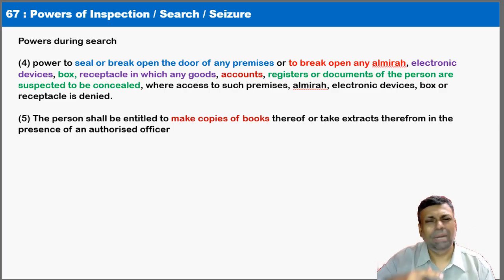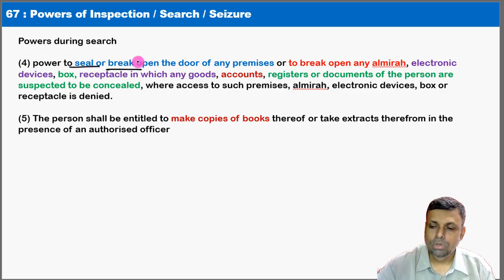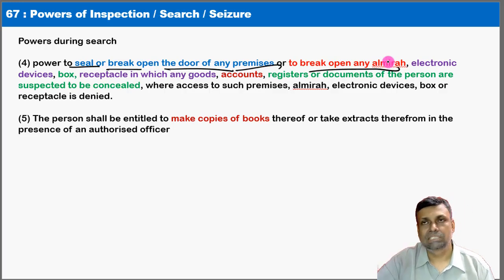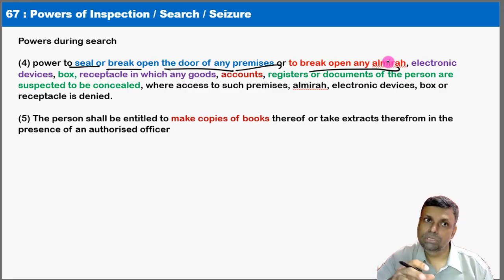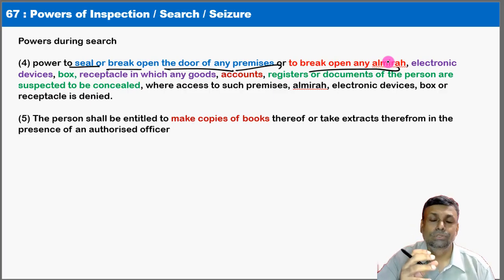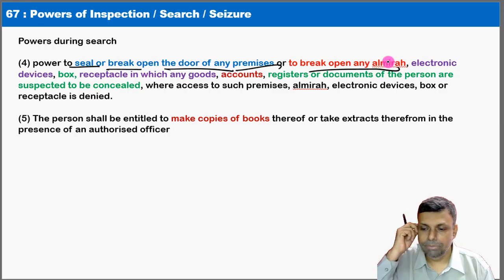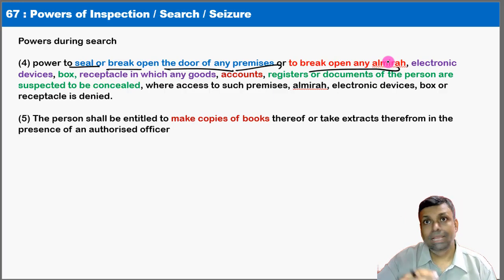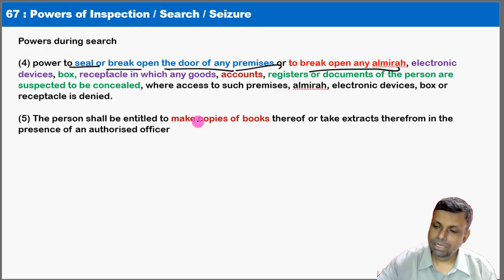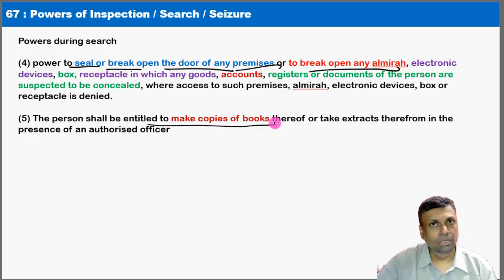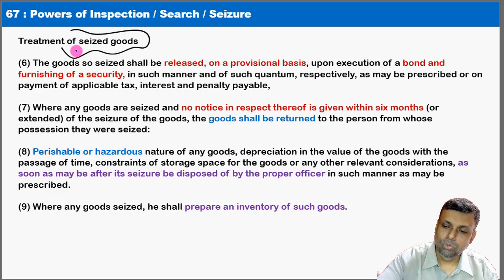During search operations, authorities have broad powers: they can break open sealed doors, premises, almirahs, electronic devices, boxes, and receptacles. This extraordinary power exists because items may be hidden inside locked cupboards or containers. Officers can also make copies of books, documents, and materials available during proceedings.